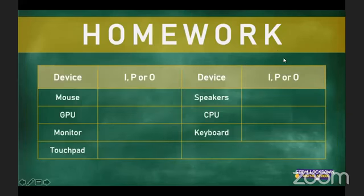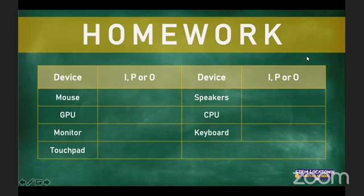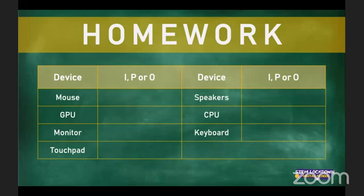Next, we had to identify whether each device is an input, processing, or output device. A mouse — it's an input device. We interact with our screen and click on different applications using a mouse, so we are giving the computer information. A GPU — it's a processing device, and the name itself gives it away: graphical processing unit. A monitor — it's an output device. It is displaying information to me; I am not giving it information.